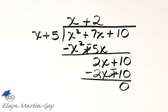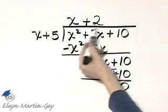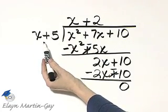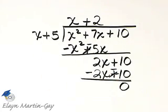My quotient is x plus 2. How can you check? Multiply this binomial by your divisor binomial, x plus 5, and you should get that dividend trinomial.